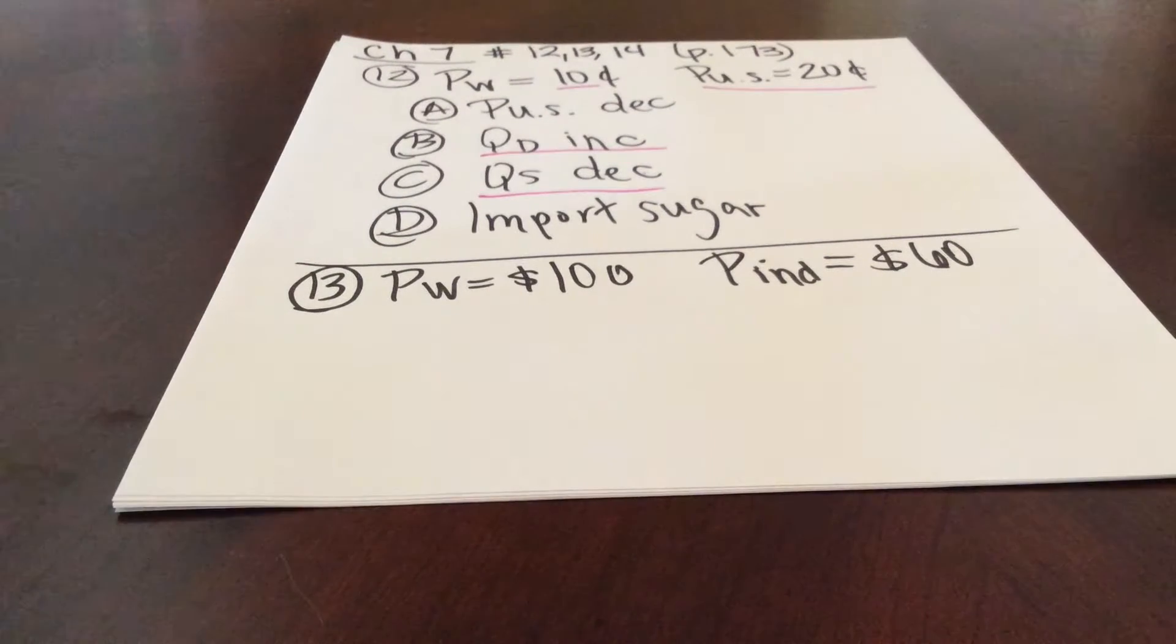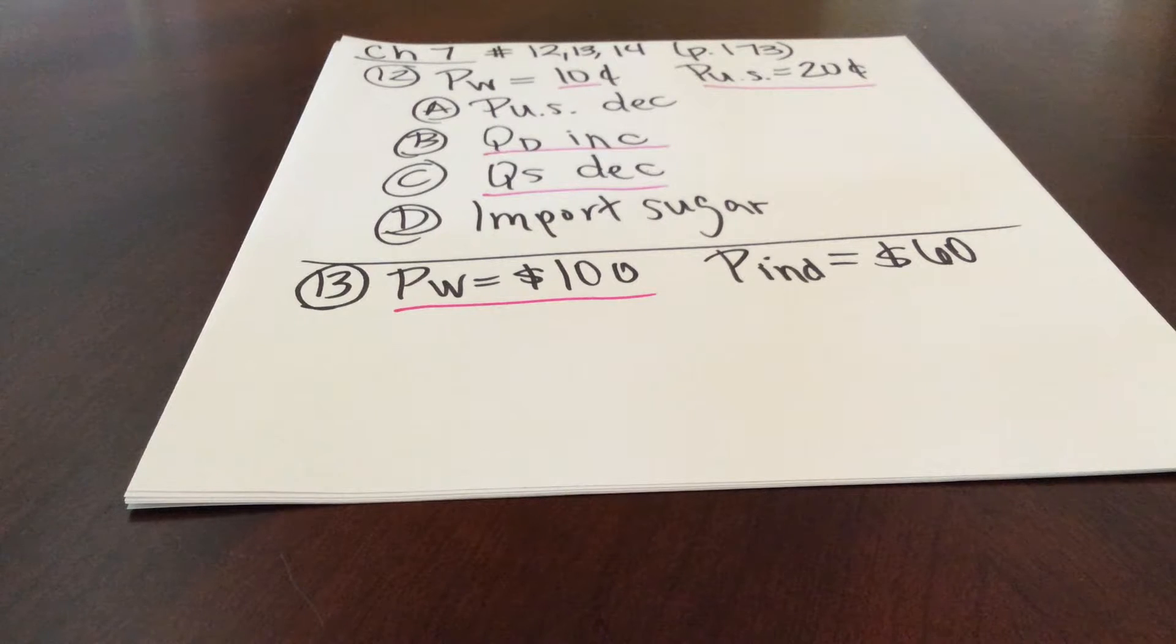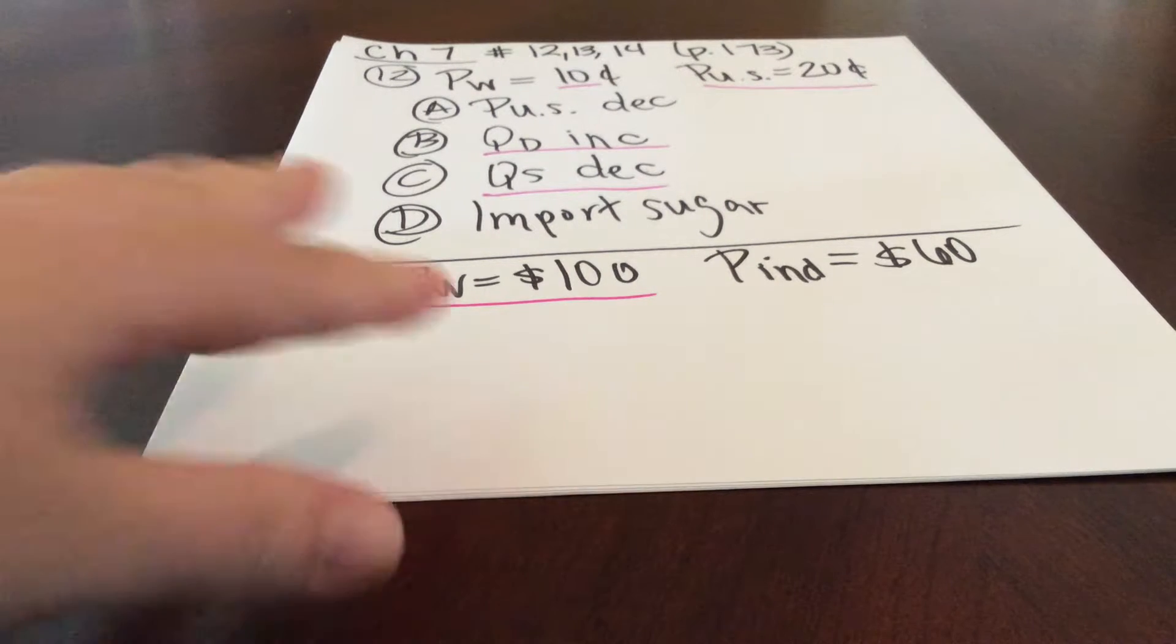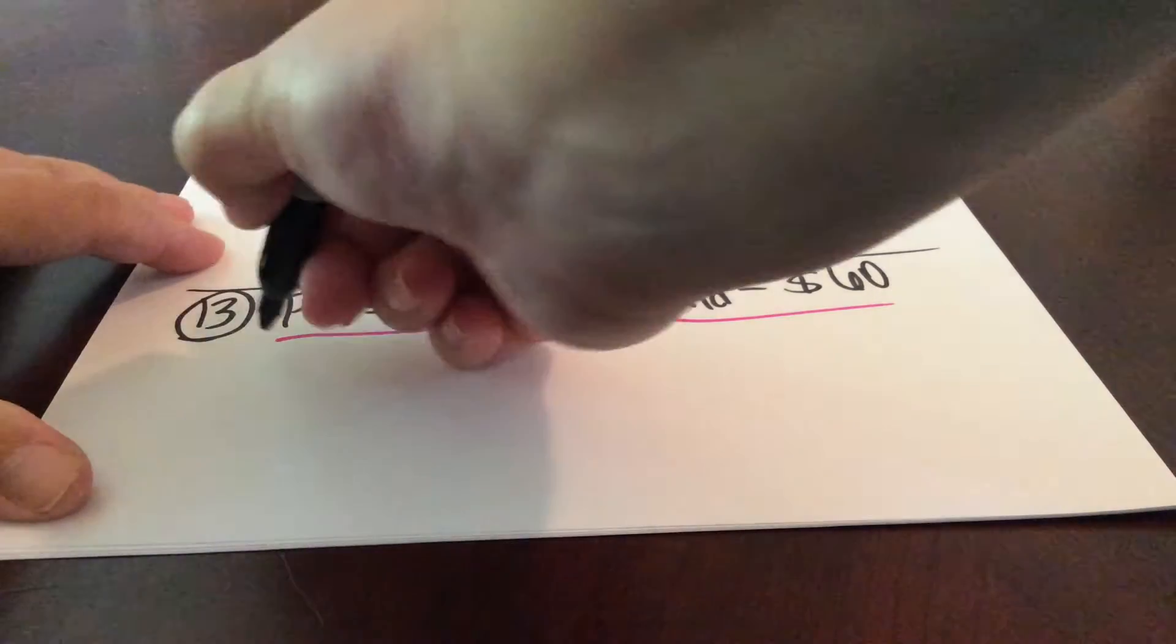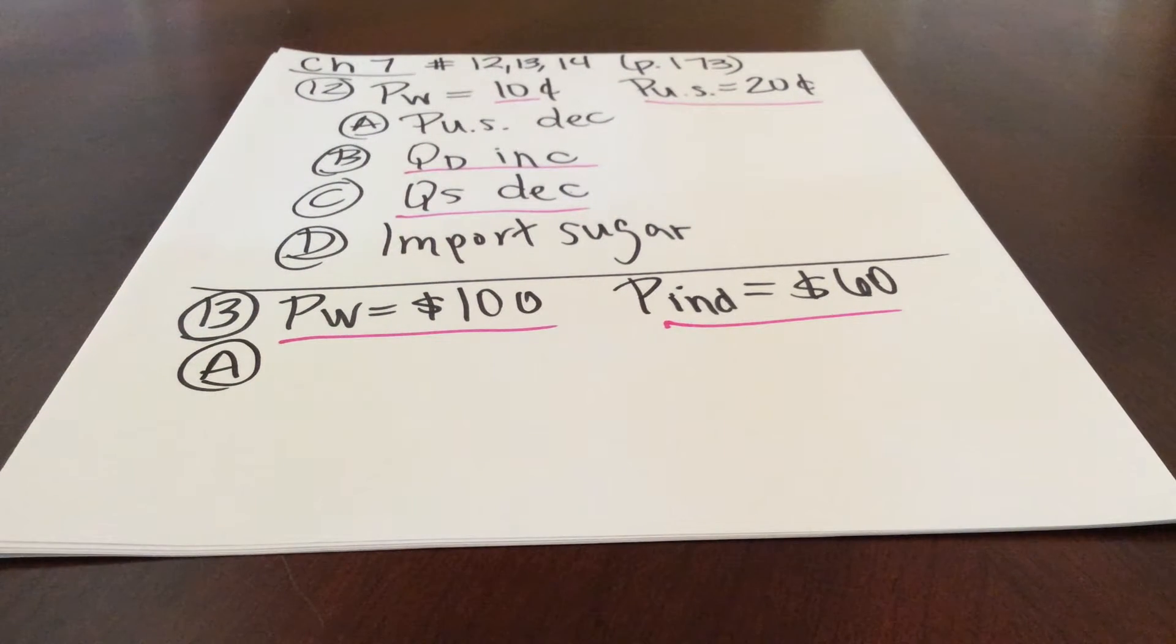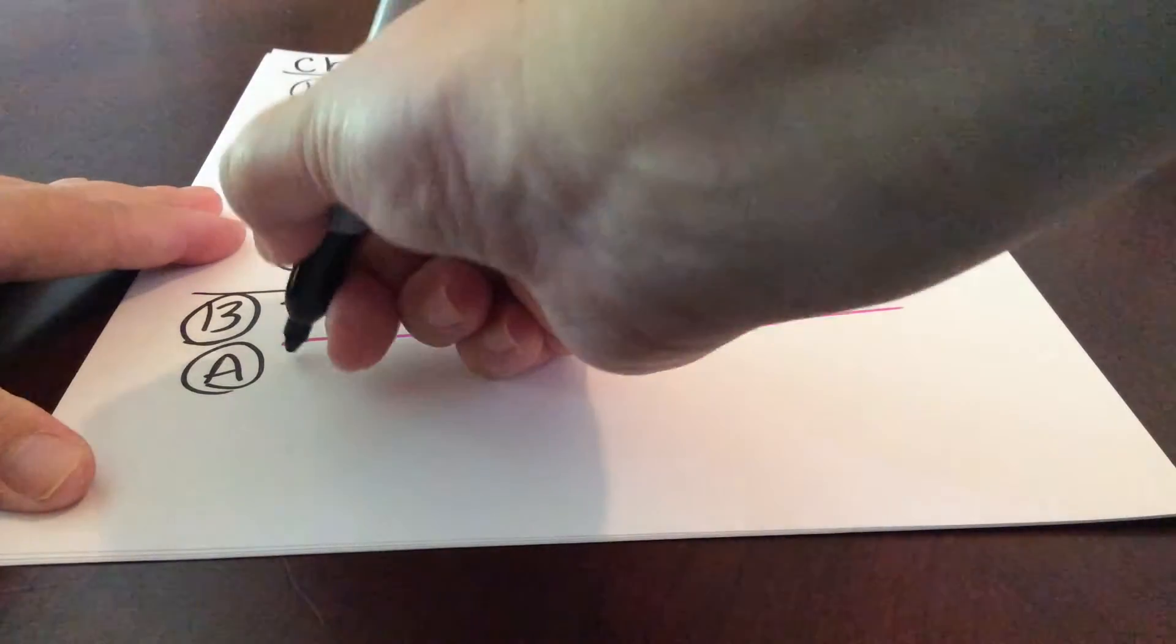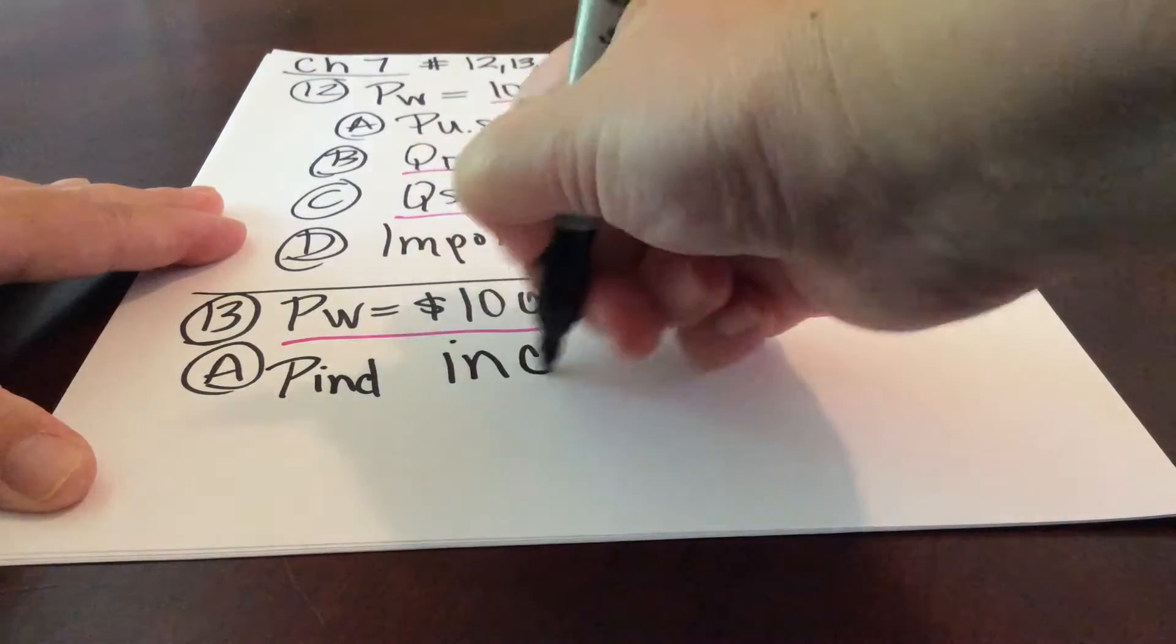Now we're going to move on to question 13. Like I said, these are pretty basic. This is a similar question. Now we're looking at the market for steel. We're looking at India. So we're told that the world price of steel is $100 per ton, that India does not initially trade internationally, and that the equilibrium price of steel in India is $60 per ton. So now we have a case where the domestic market's price is cheaper than the global market. So part A. How does the price of steel change in India when India begins to trade internationally? Well, the price of steel in India is going to rise to equal that world price. So the price in India will increase.